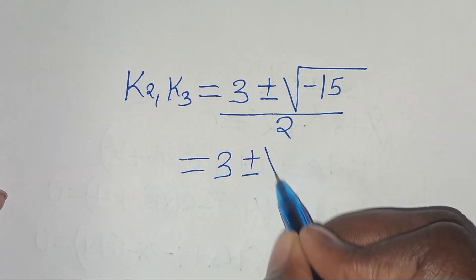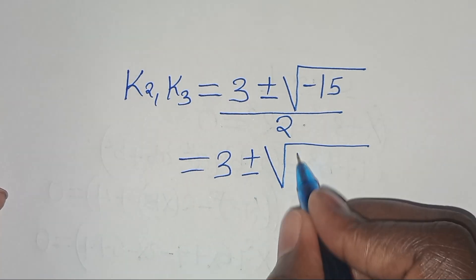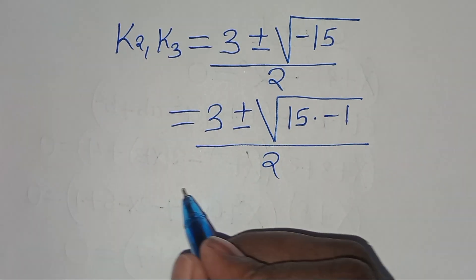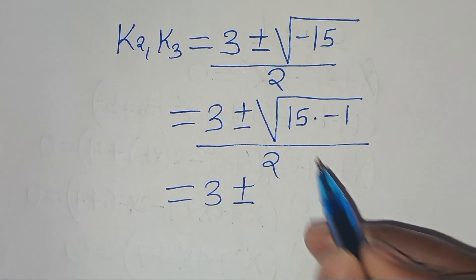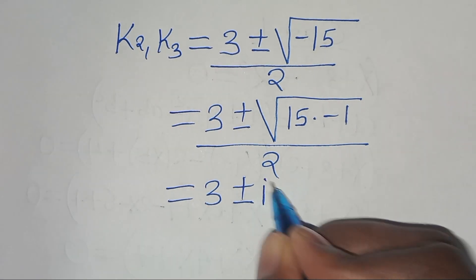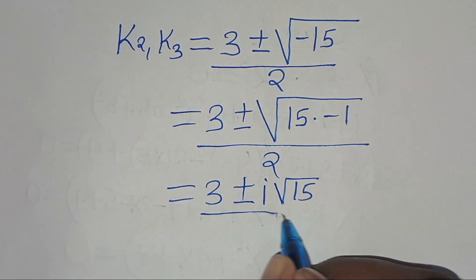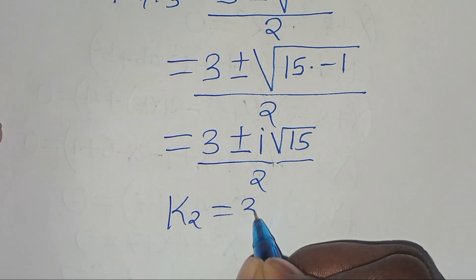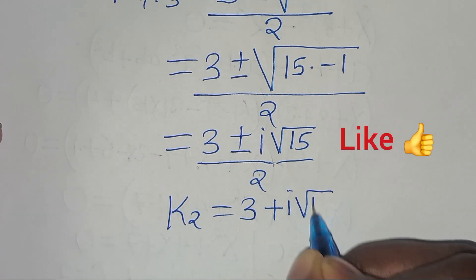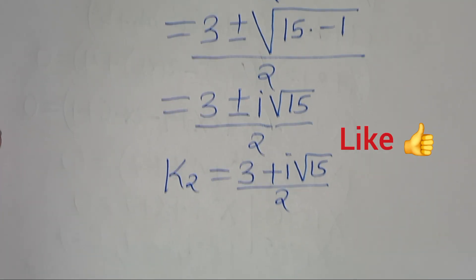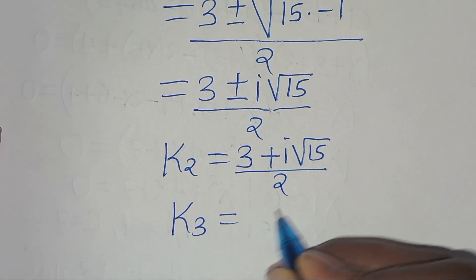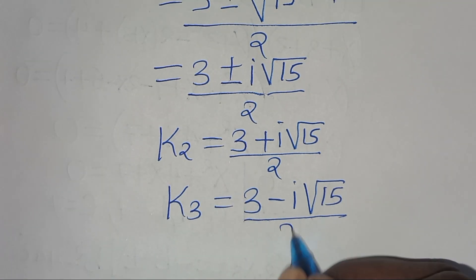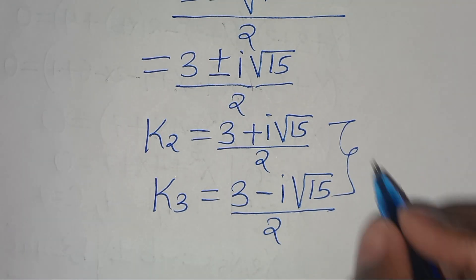We express √(−15) as √15 × √(−1), so √(−15) = i√15. Therefore, k₂ = (3 + i√15) / 2 and k₃ = (3 − i√15) / 2. These are two complex solutions.